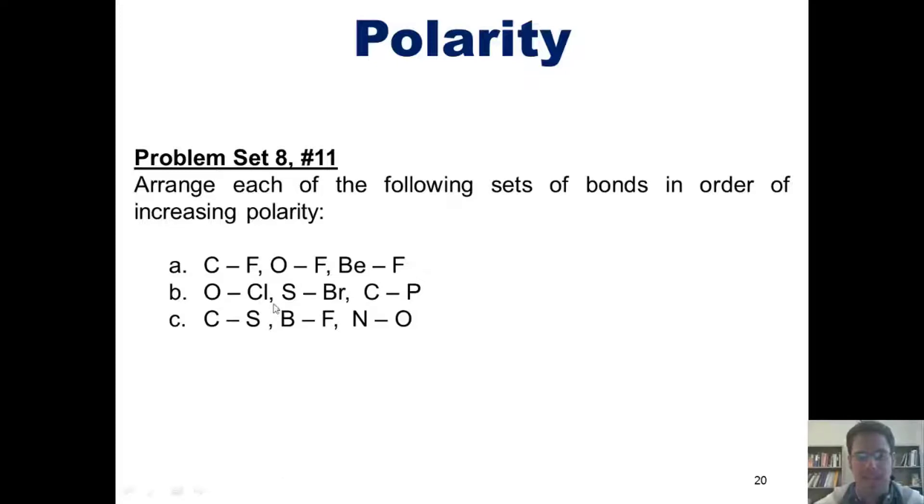I'll go ahead and pick example A. We've got carbon bonded to fluorine, oxygen bonded to fluorine, and beryllium bonded to fluorine. Which of those has the most polar bond? Well, you'll note that beryllium is a metal, and fluorine is a nonmetal. Thus, in a beryllium-fluorine bond, the beryllium is more or less going to completely transfer its electron density to the fluorine,